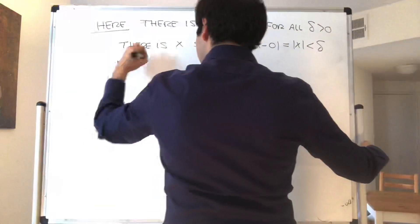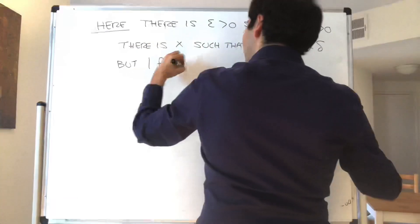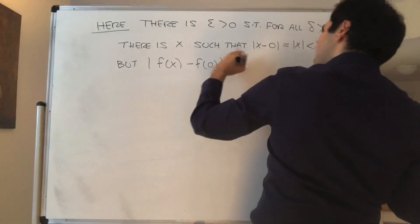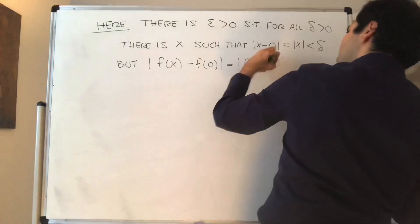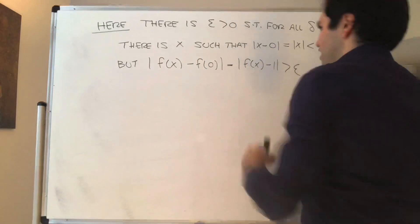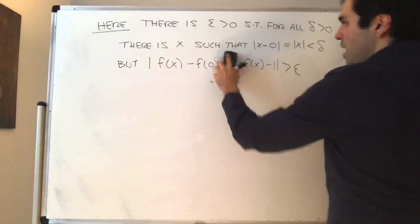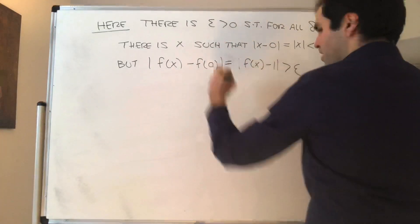but f of x minus f of 0, so f of x minus 1, is greater than epsilon. So let me remind you of what our function looks like.